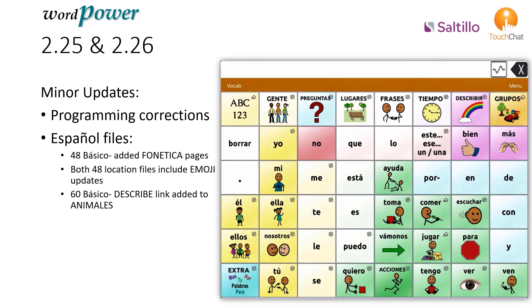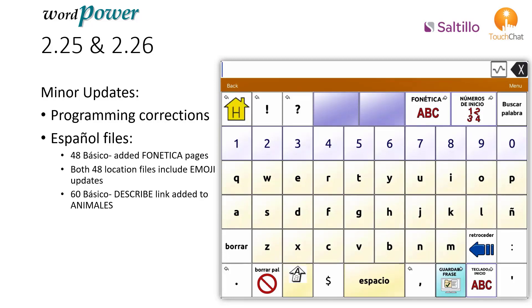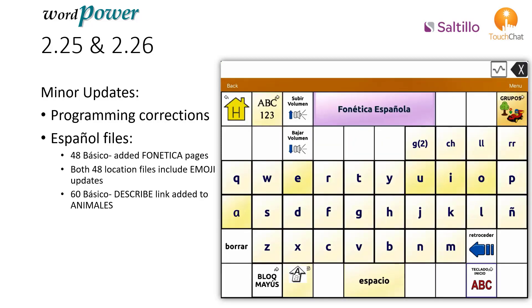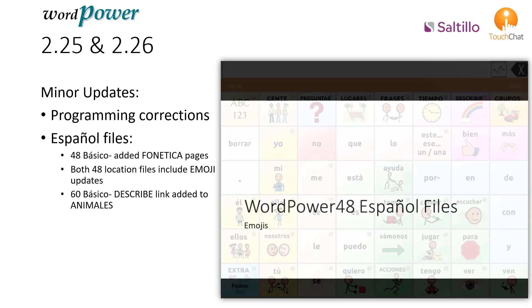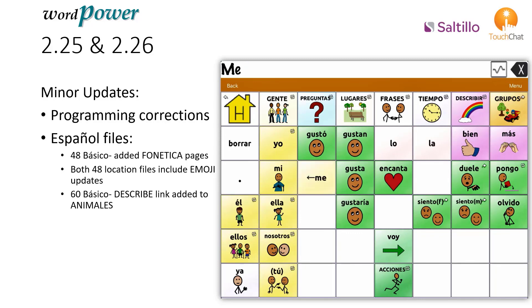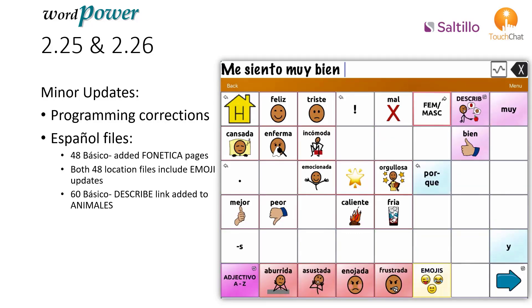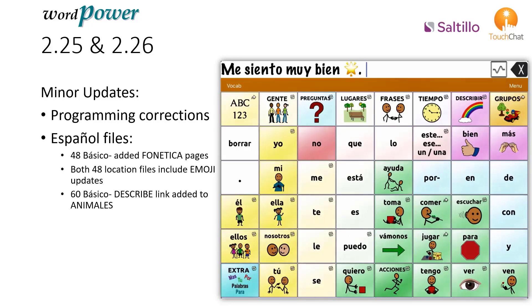Updates to the Spanish file include adding a phonics page to the 48 BOSICO file. Both 48 location files include emoji updates.